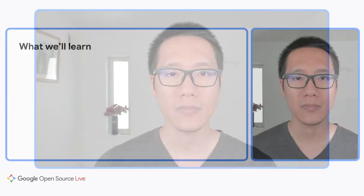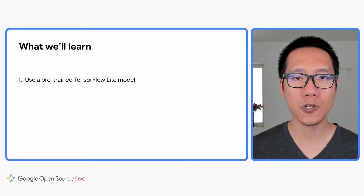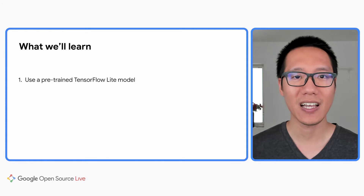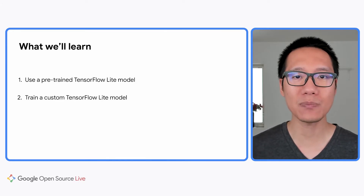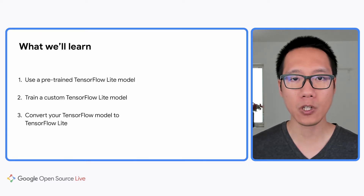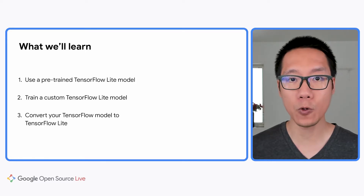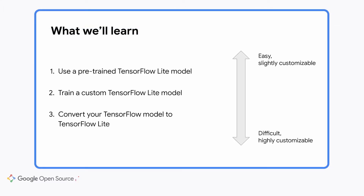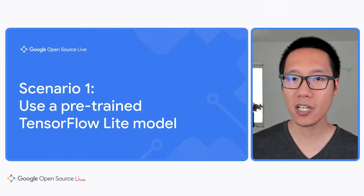We'll cover three scenarios. First, I'll show you how to use a pre-trained TensorFlow Lite model to add on-device machine learning to your applications in just a few minutes. Second, I'll show you how to train a custom TensorFlow Lite model for use cases not supported out of the box. And finally, I'll show you how to convert TensorFlow models to TensorFlow Lite for full customization. The first scenario is very easy but offers few customization options, while the third scenario offers a lot of flexibility but requires expertise in building machine learning models.